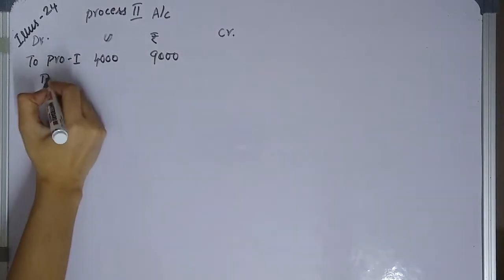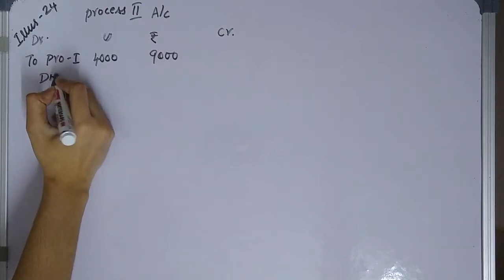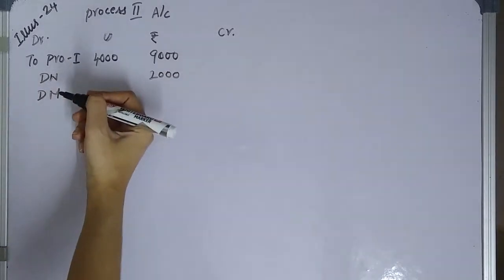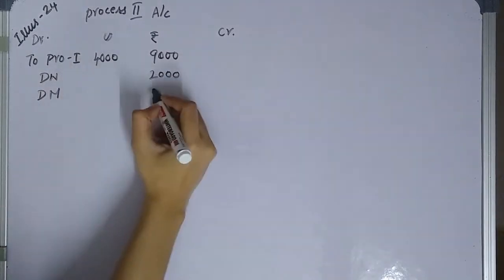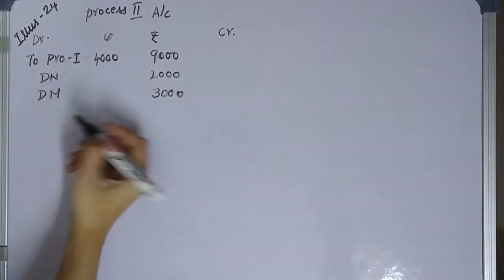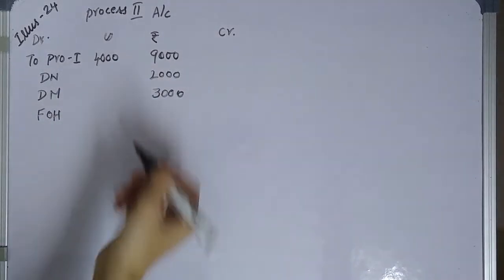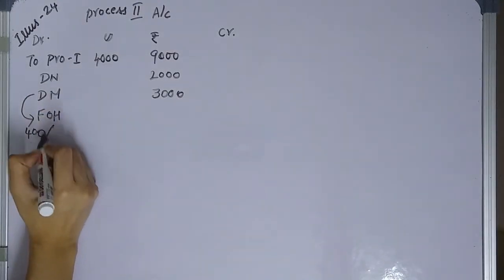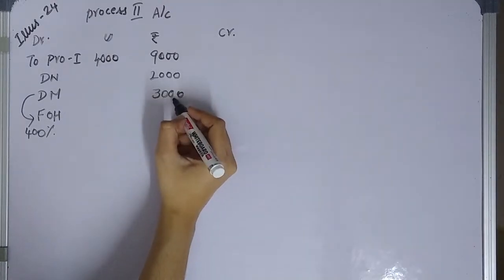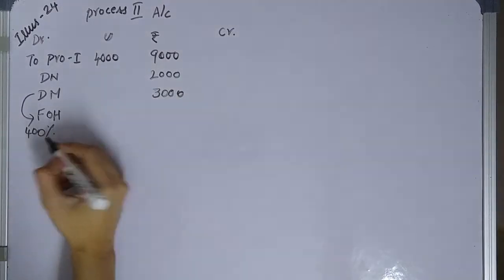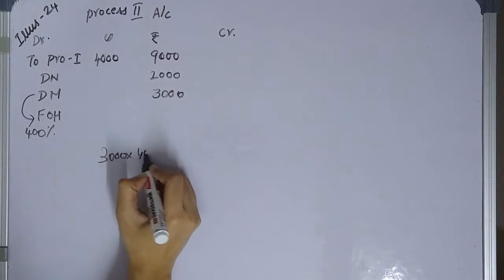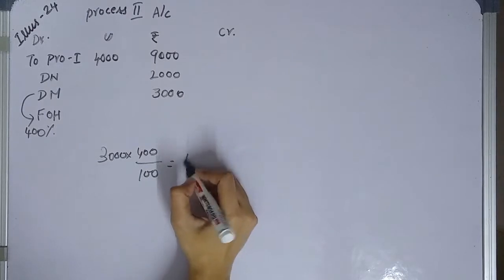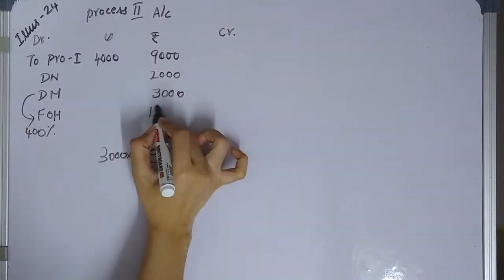On the debit side: direct wages 2,000 rupees; direct material 3,000 rupees. Factory overhead is 400% of direct materials. So 3,000 multiplied by 400 divided by 100 gives us 12,000 rupees factory overhead.